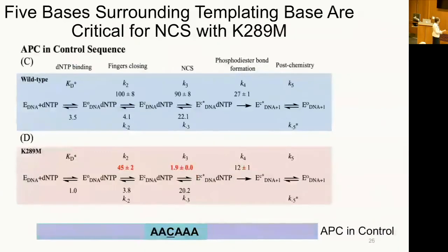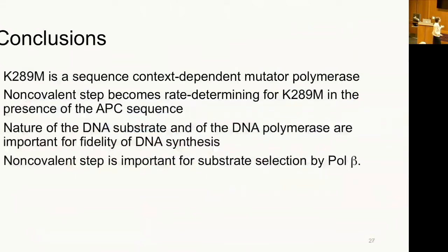Our conclusions are that K289M is a sequence context-dependent mutator polymerase, that the non-covalent step becomes rate determining for K289M only in the presence of the APC sequence, and that the nature of the substrate and of the polymerase are critically important for the fidelity of DNA synthesis. We think the non-covalent step is important for substrate selection by Pol beta — now we've got to figure out what it is.